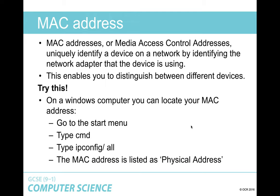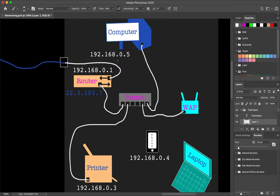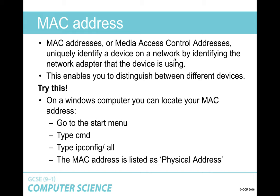A MAC address is different from an IP address because a MAC address identifies hardware, whereas an IP address can be configured — you can have your router assign IP addresses dynamically depending on whether devices are online or offline, so the IP address of a device can change over time. What can't change is its MAC address, which is unique to the hardware.